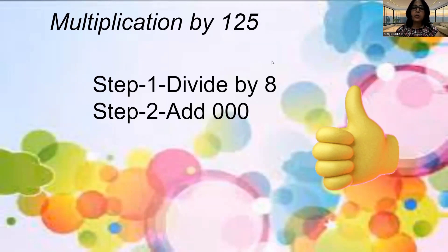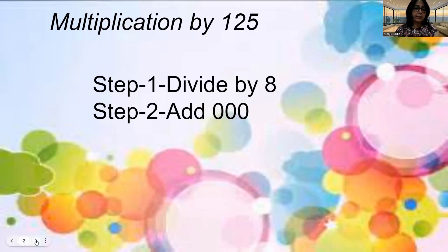Simple step you have to follow. That means divide the number by 8 and add three 0's. That means you have to know the table of 8 only. You don't have to remember the table of 125. So let's see how it is.